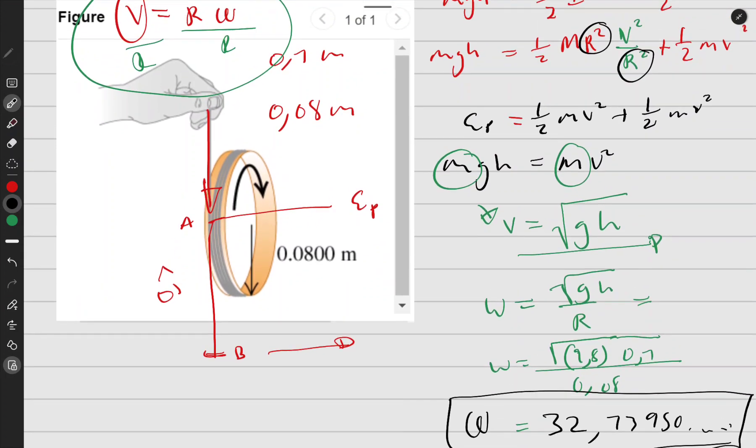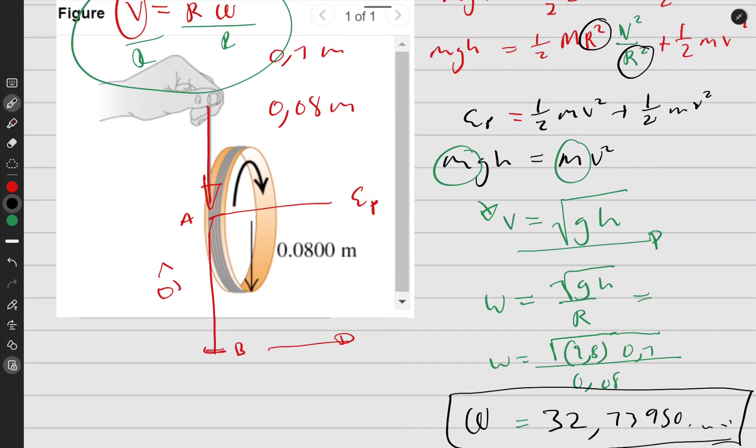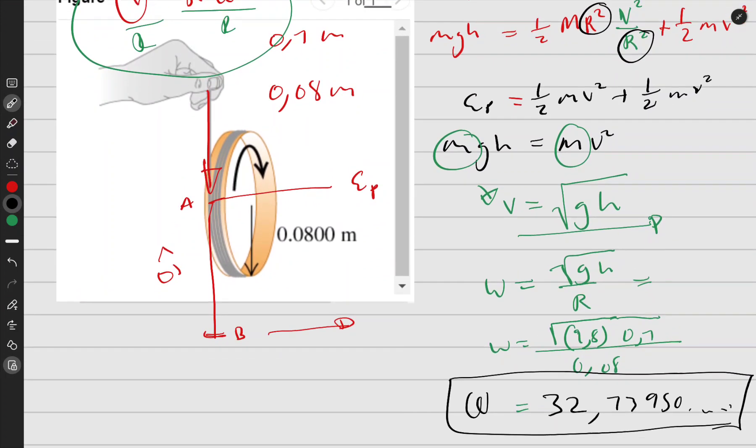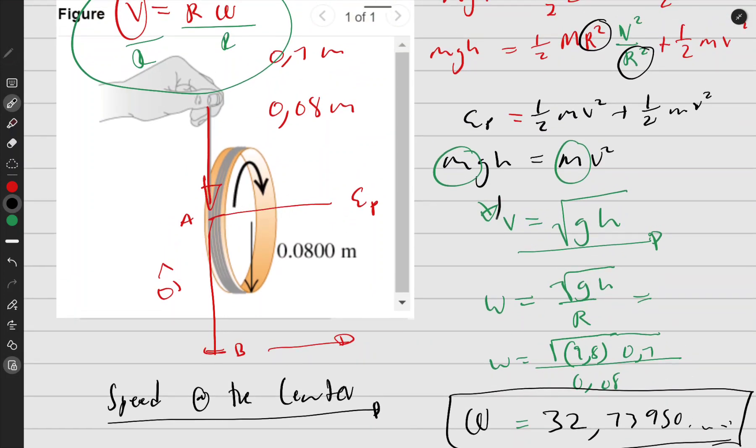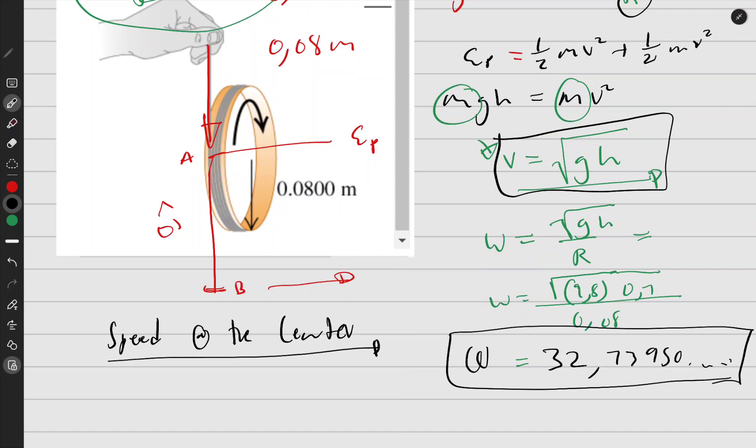The next question wants us to find the speed at the center—that's what we started with. This is the answer for that, the speed at the center. We're just going to use the calculator again.